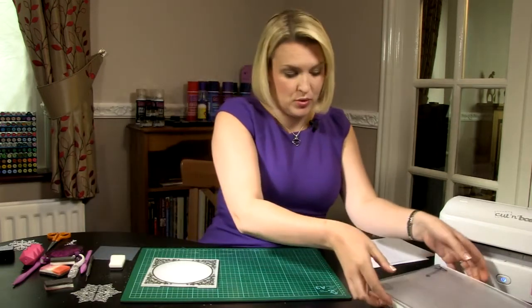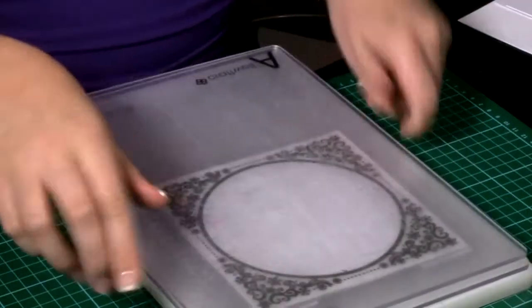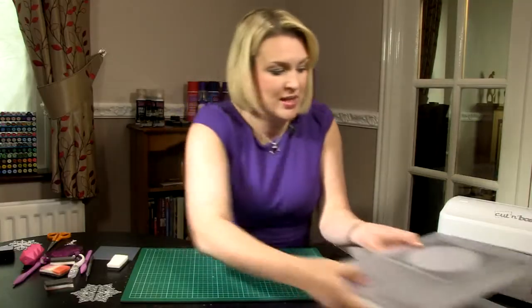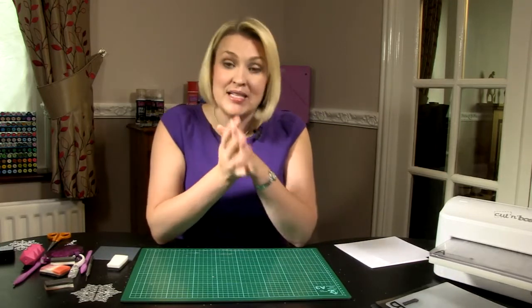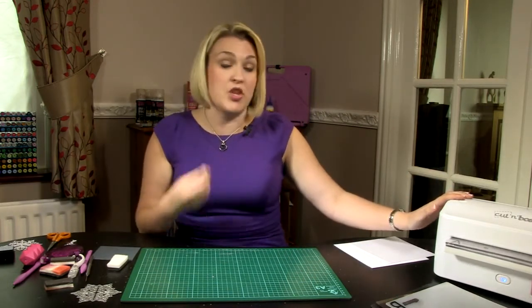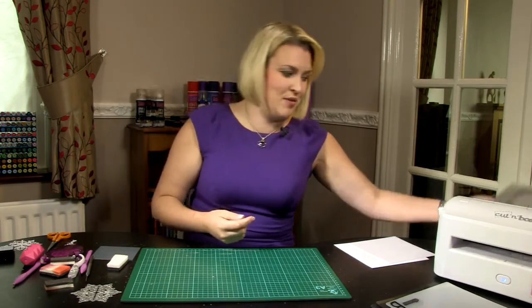Now these embossing folders are designed to work universally in all machines. I'm using it here with the cut emboss machine, sandwiching it between the two A plates and the D plate on the bottom. The embossing folders give a really nice deep emboss but they are designed to work universally with all different types of machines. If you want to use this with your Cutler bulb, C6 Big Shot machine, or Grand Caliber machine, it will work with all the different die cutting and embossing machines out there on the market.